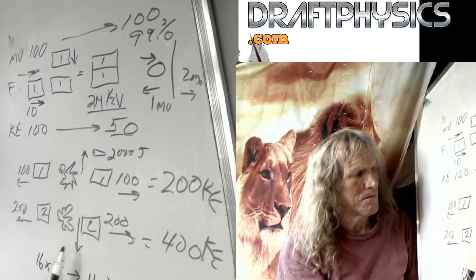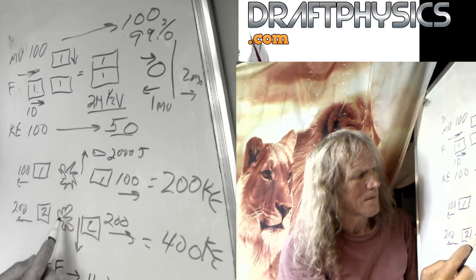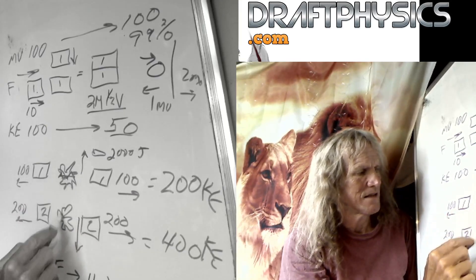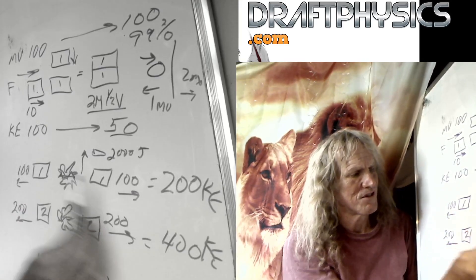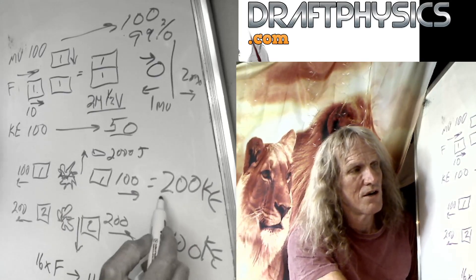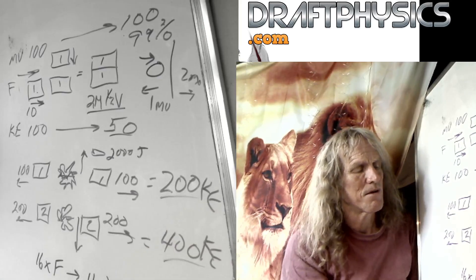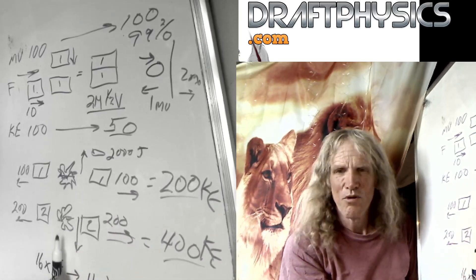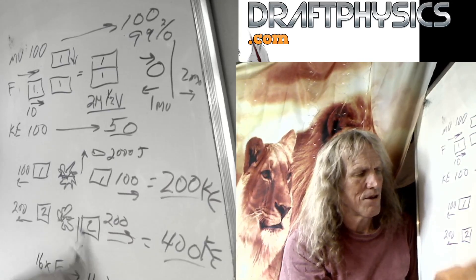So another experiment's been done by physicist Michael where he had the same explosive, the same spring, compressed exactly the same amount. And it pushes objects away, and he gets these bizarre numbers where there's 400 KE in one experiment or 200 in momentums. And somehow I get more and more momentum the heavier the object I put.